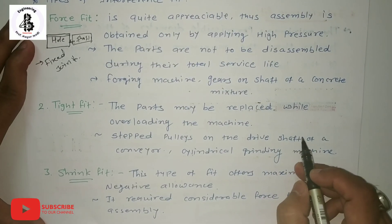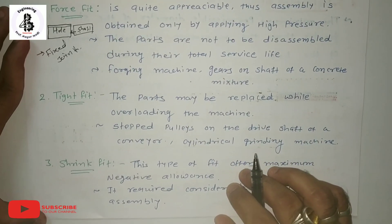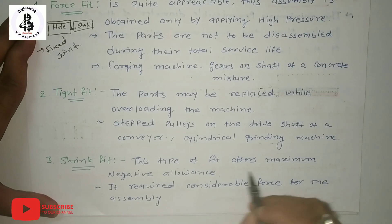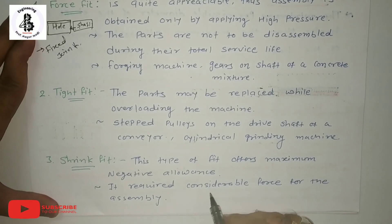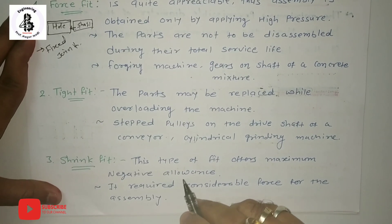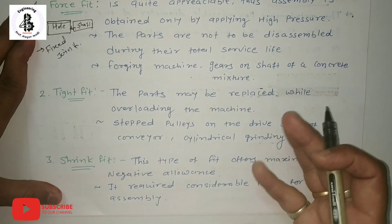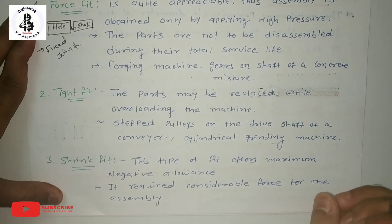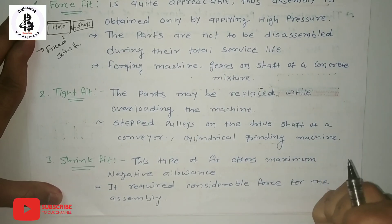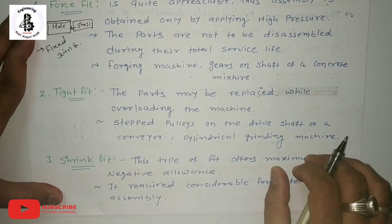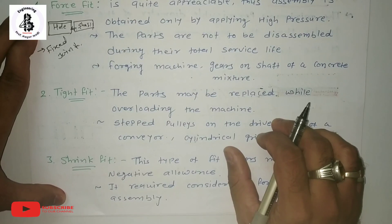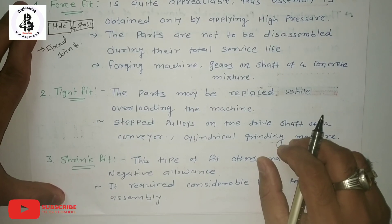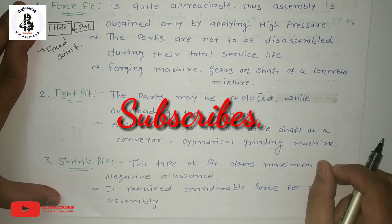The third type is shrink fit. This type of fit offers maximum negative allowance and requires considerable force for assembly. The component is first heated so it expands, then fitted, and as it cools down it shrinks — that is called a shrink fit. It offers maximum negative allowance: first expand, then compress. These are all the types of interference fits applicable in the field of production and measurement science. Thank you very much.